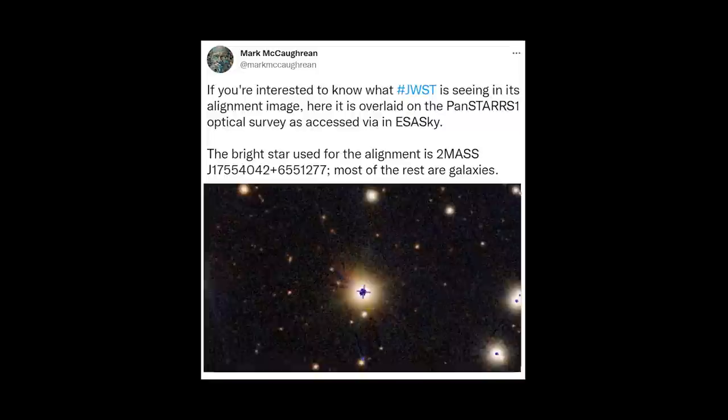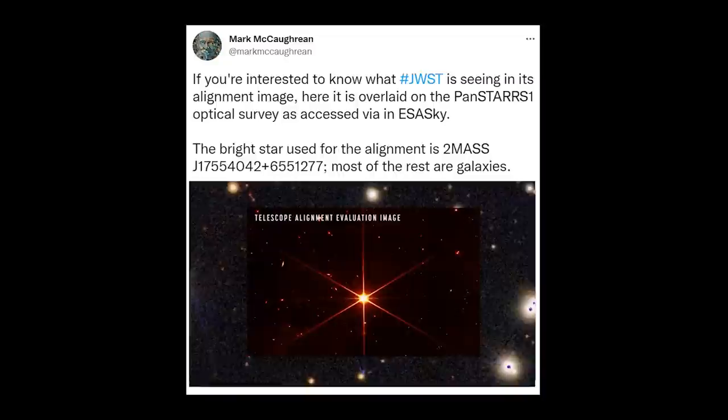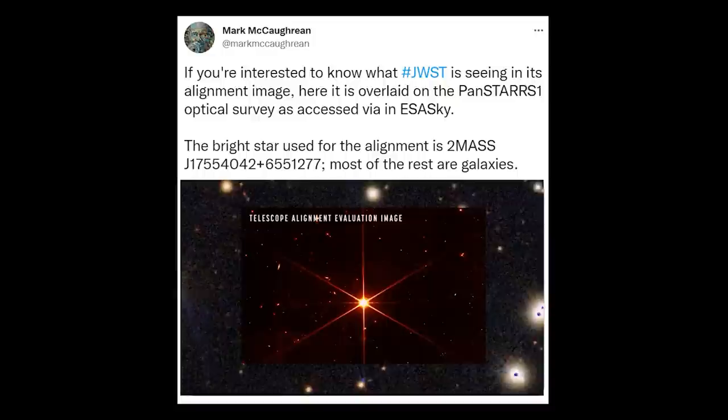Mark McCochran, Senior Advisor for James Webb said on Twitter, If you're interested to know what James Webb is seeing in its alignment image, here it is overlaid on the Pan-STARS-1 optical survey. The bright star used for the alignment is two-mass, while most of the rest are galaxies.